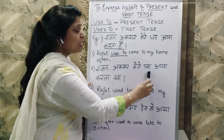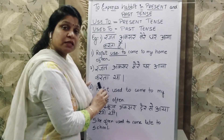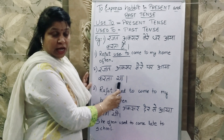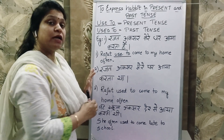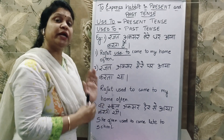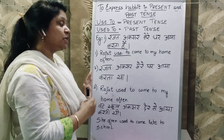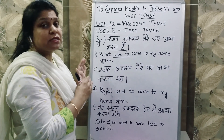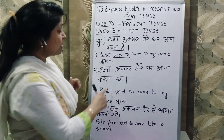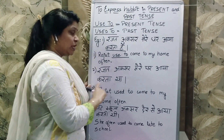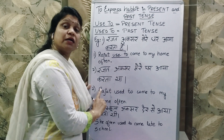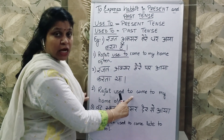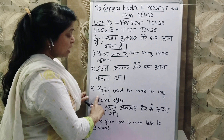'Rajat aksar mere ghar aya karta tha' — karta tha, habit ko show karna hai. Agar hum simple past tense me chahte, toh hum kehte hain 'Rajat mere ghar aya.' Tab past simple tense hota, but past simple me habit show nahi hoti — ki 'aya karta tha.' Yahan habit show karne ke liye hum 'used to' lagayenge.